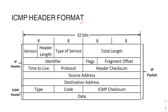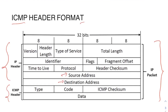Now let's look at the ICMP header format. ICMP is part of the network layer, so you have the IP packet with an IP header part — version, header length, type of service, TTL, protocol, source address, destination address — and then additional ICMP-specific fields: type, code, ICMP checksum, and optional data.